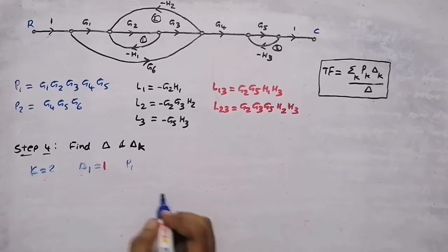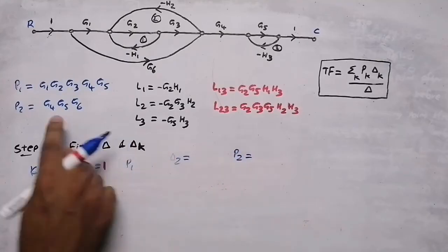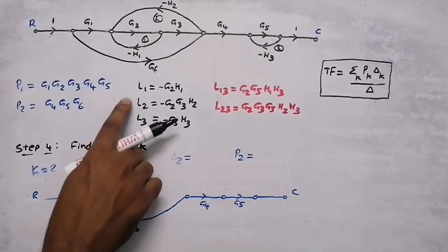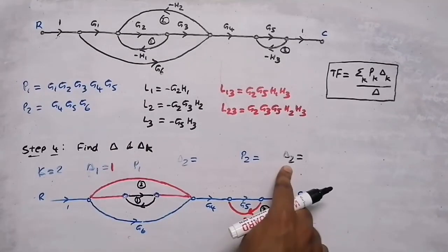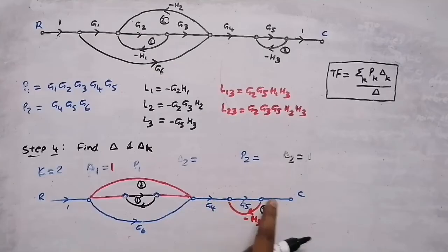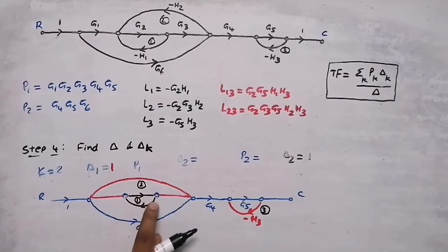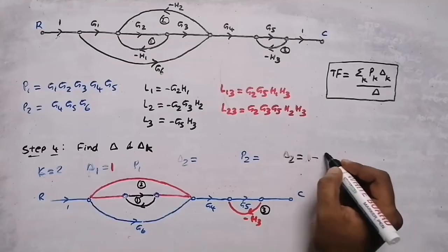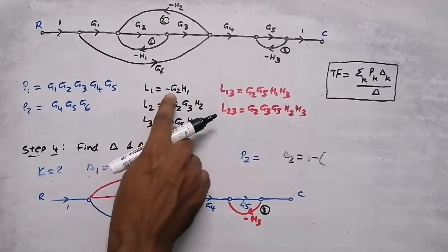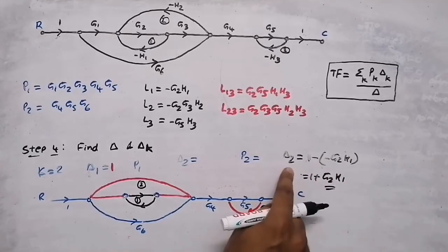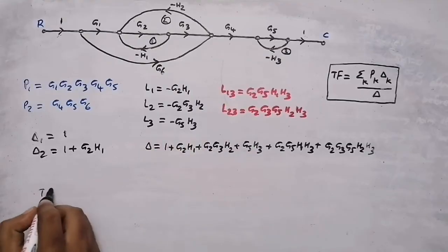For Δ2, we take the second forward path P2 = g4·g5·g6. Loop 3 and Loop 2 are both touching this forward path, but Loop 1 (g2·h1 loop) does not touch it at all. When a loop does not touch the forward path, we write 1 minus the gain of that loop: Δ2 = 1 − (−g2·h1) = 1 + g2·h1.